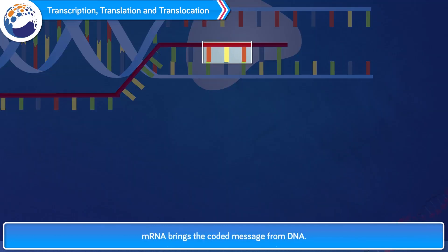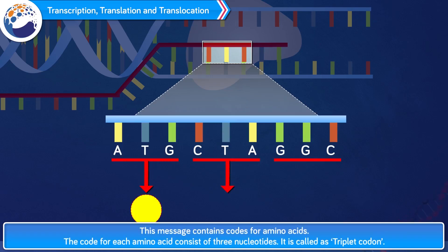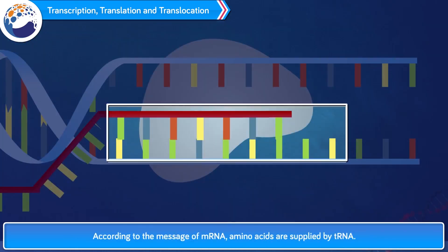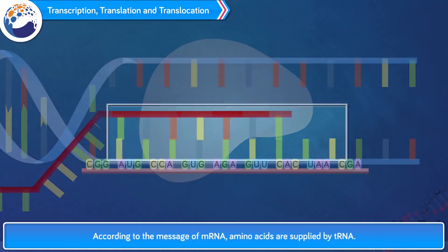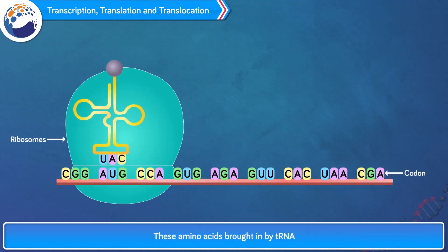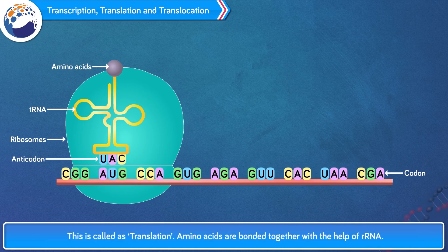mRNA brings the coded message from DNA. This message contains codes for amino acids. The code for each amino acid consists of three nucleotides, called a triplet codon. According to the message of mRNA, amino acids are supplied by tRNA. tRNA has an anticodon having a complementary sequence to the codon on the mRNA. This process is called translation.